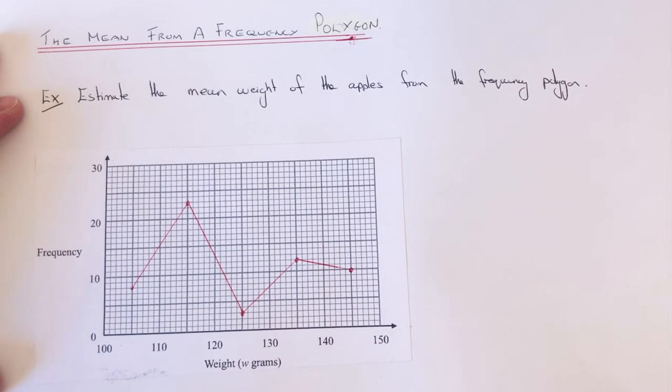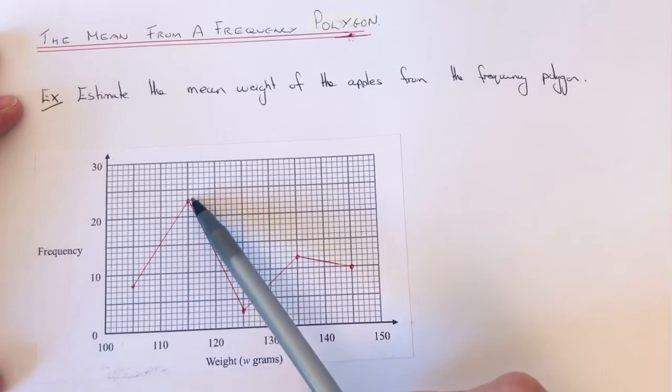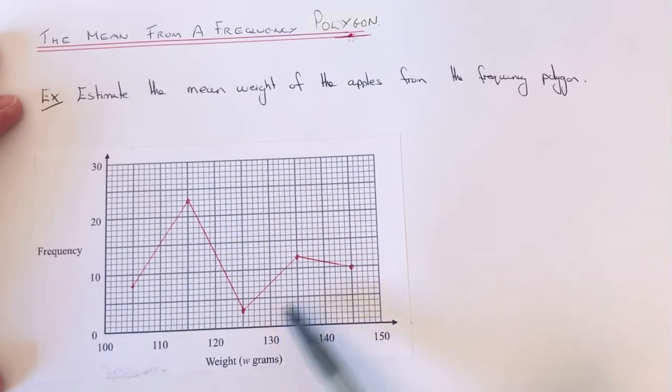The first thing we'll need to do is work out the total weight of all our apples. We can do this by multiplying the frequency by the midpoints of each group.